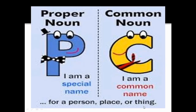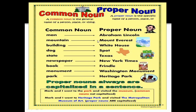A common name is a common noun. A special name for a person, place, or thing is a proper noun. For example, common nouns include: man, mountain, building, dog, state, newspaper. When given a specific name — like New York Times, Dawn, or The Tribune — newspaper becomes a proper noun. Similarly, 'park' becomes a proper noun when named, such as Heritage Park. Proper nouns are always capitalized.